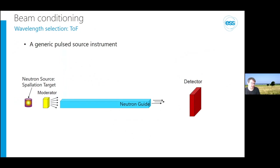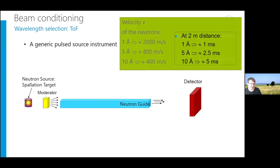This shows a generic pulse instrument with a spallation target on one side, neutrons being moderated, and traveling through a neutron guide. To give a sense of neutron speeds: a 1-angstrom neutron travels at around 4000 m/s while a 10-angstrom neutron travels at 400 m/s. In a 2-meter distance, a 1-angstrom neutron needs about 0.5 milliseconds and a 10-angstrom neutron needs about 5 milliseconds.